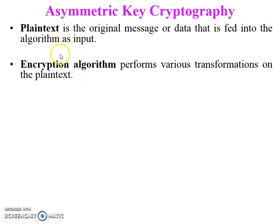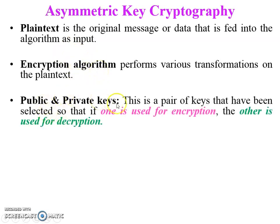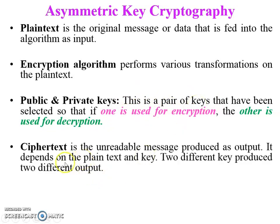A disadvantage of symmetric key cryptography is that once the key is stolen, all transmitted data can be easily decrypted. Now moving to asymmetric key cryptography — also called public key cryptography, while symmetric key cryptography is called secret key cryptography. There are six elements in the asymmetric cipher model.